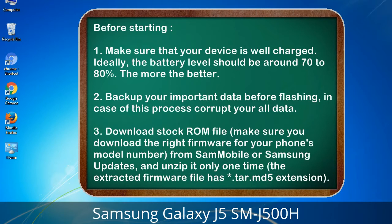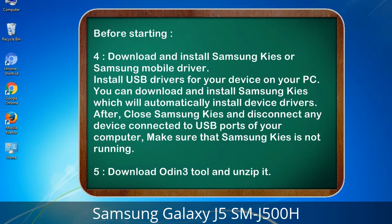Make sure you download the right firmware for your phone's model number from Sammobile or Samsung Updates, and unzip it only one time. The extracted firmware file has a *.tar.md5 extension. Download and install Samsung KIES or Samsung mobile driver to install USB drivers for your device on your PC. Samsung KIES will automatically install device drivers. After installation, close Samsung KIES and disconnect any device connected to USB ports of your computer; make sure that Samsung KIES is not running.